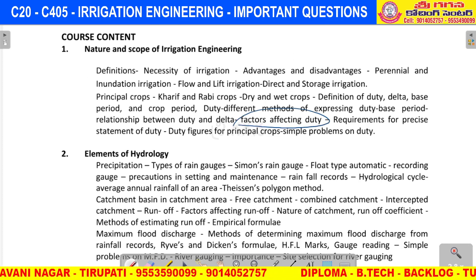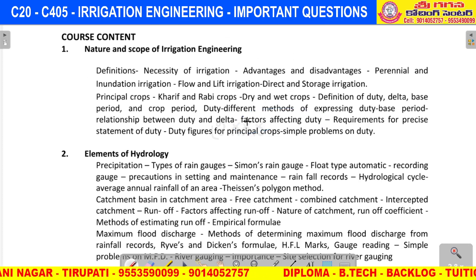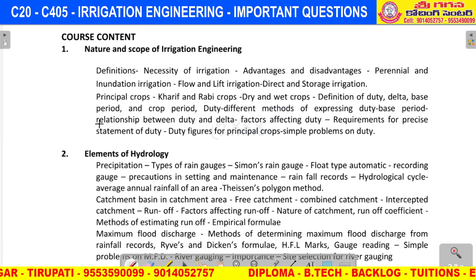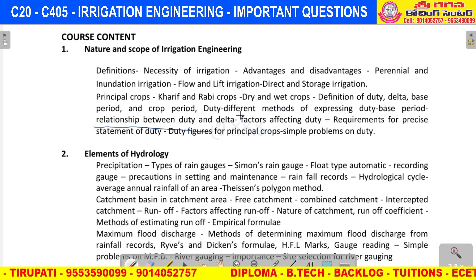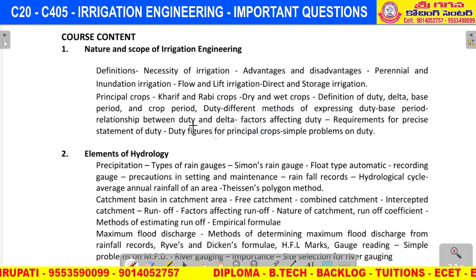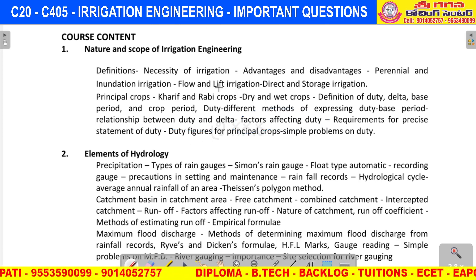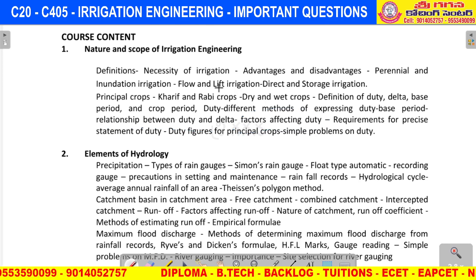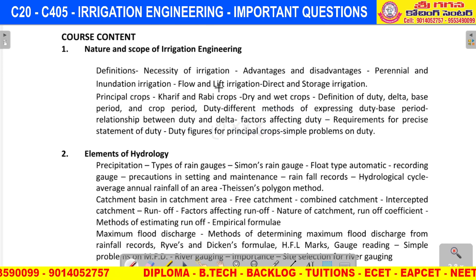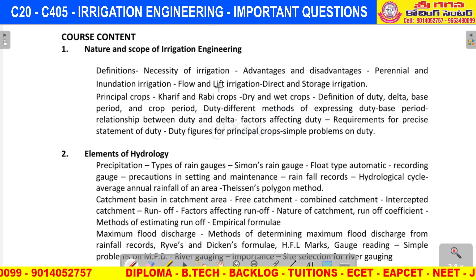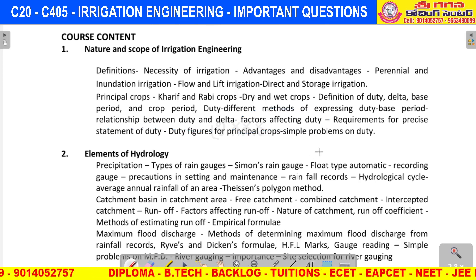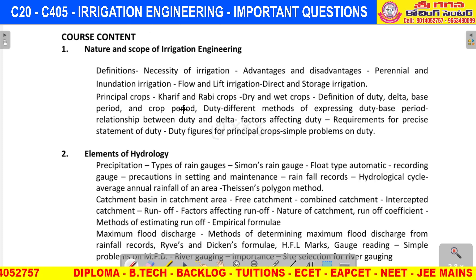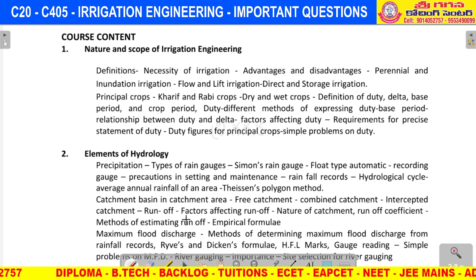Factors affecting duty — important. And the last question: the duty-delta relation, that is delta = 8.64 / D. That completes the first unit. Next, second unit.